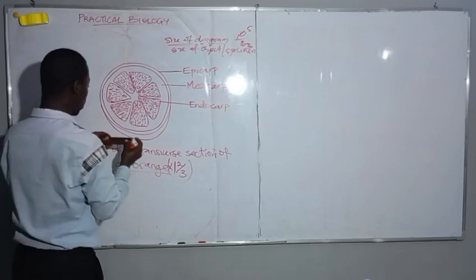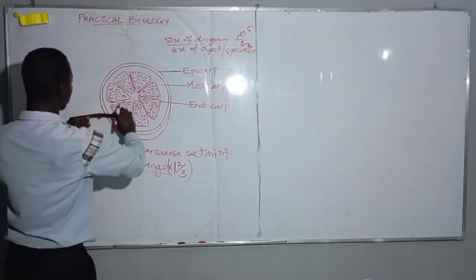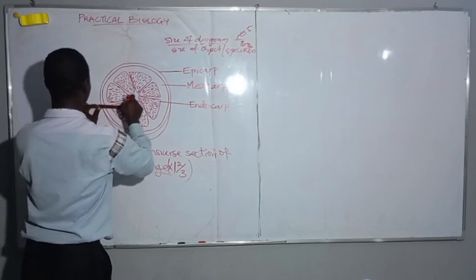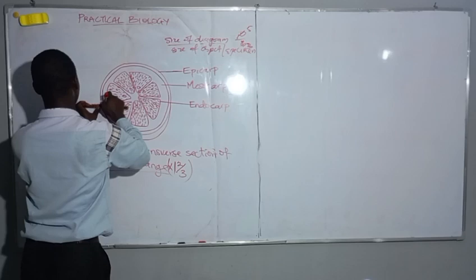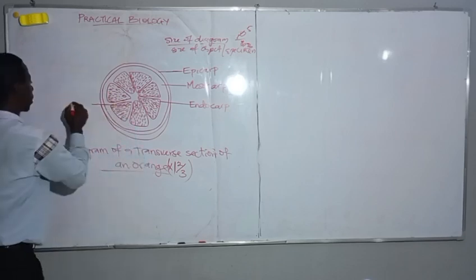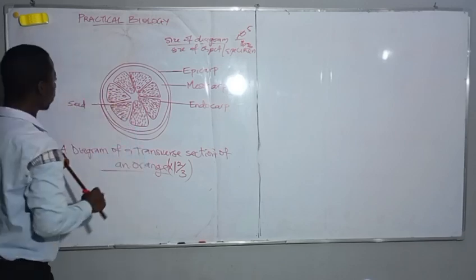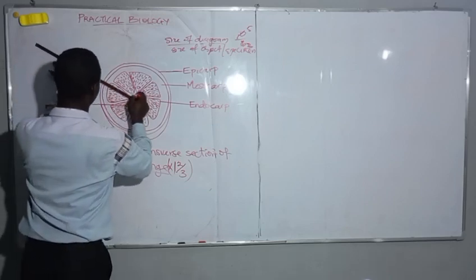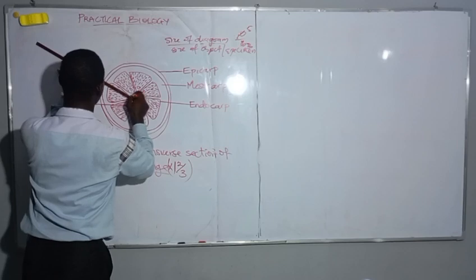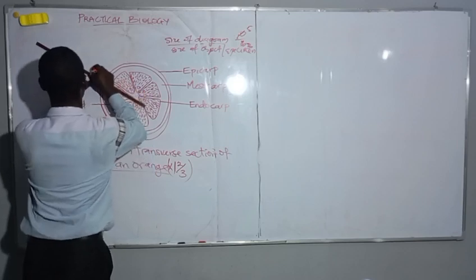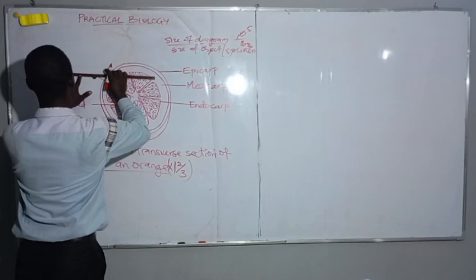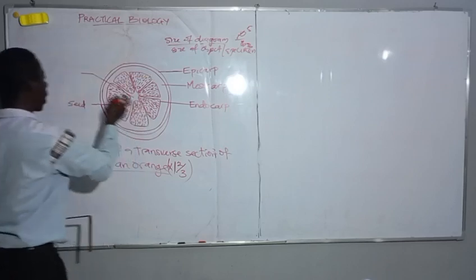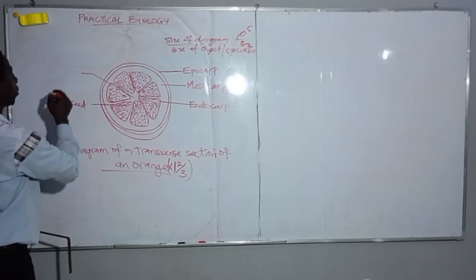This is a seed. Then we also have the placenta. Always ensure that your label guidelines are horizontal — even if it slants, ensure that at the end it is horizontal. So this is the placenta.